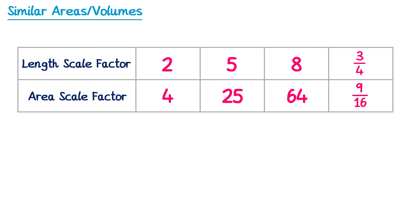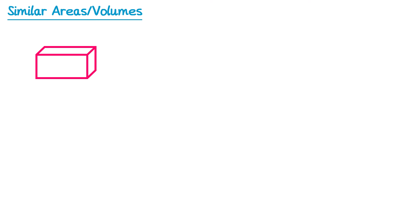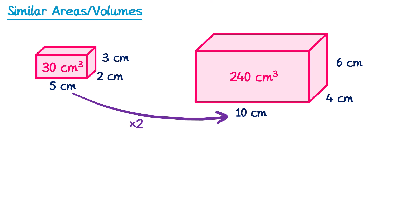So we now know what happens to areas when we enlarge a shape, but what about volume? For this we need to look at a 3D shape — let's take this cuboid with these dimensions. We're going to enlarge it by scale factor 2, so we double all the lengths: the 5 becomes 10, the 2 doubles to 4, and the 3 doubles to 6. The volume of the left cuboid is 5×2×3 which is 30cm cubed, and on the right 10×4×6 gives a volume of 240cm cubed. So the length scale factor is 2, but the volume scale factor is actually 8 — since 30 times 8 gives you 240.